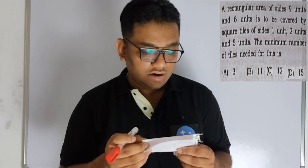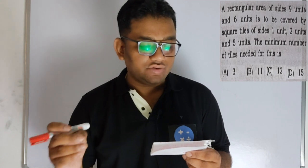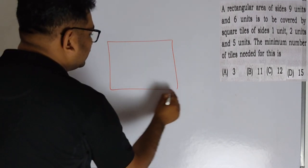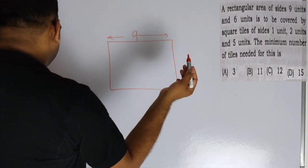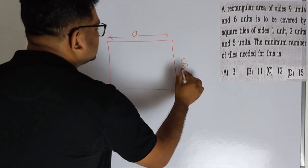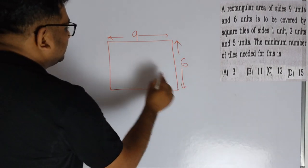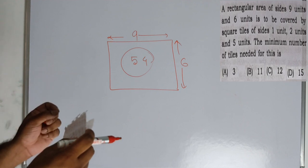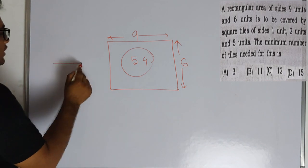Next question. A rectangular area of 9 units by 6 units is to be covered by square tiles of size 1 unit, 2 unit, and 5 unit. The total area is 9 multiplied by 6, which is 54 square units. To cover it with 1 unit tiles, you have to divide the total area.